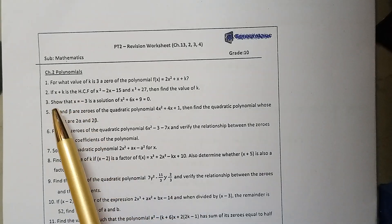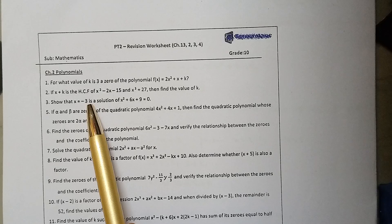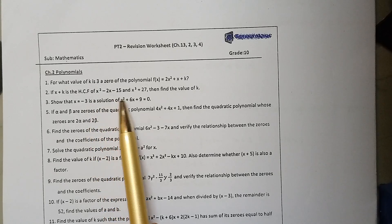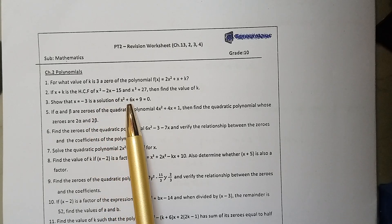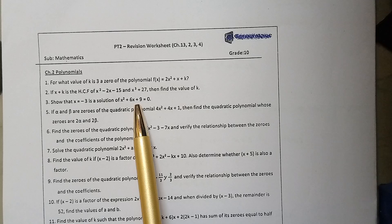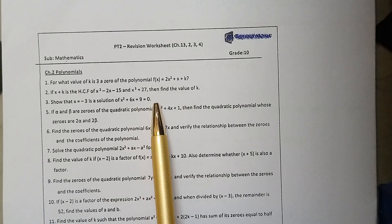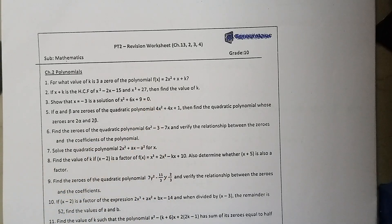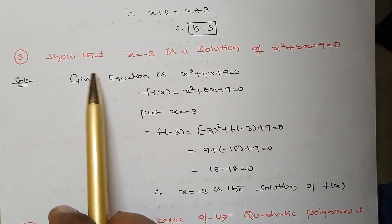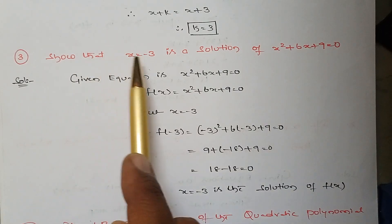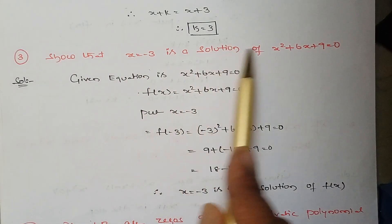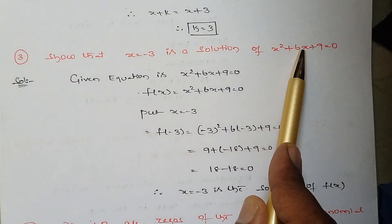So what is given? Show that x equal to minus 3 is a solution of x squared plus 6x plus 9 equal to 0. Okay, let's solve. Show that x equal to minus 3 is a solution of the given polynomial.